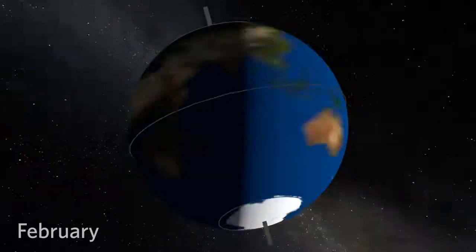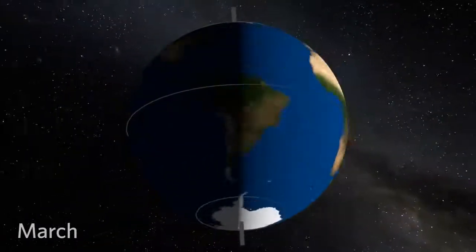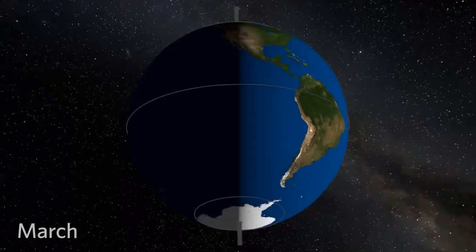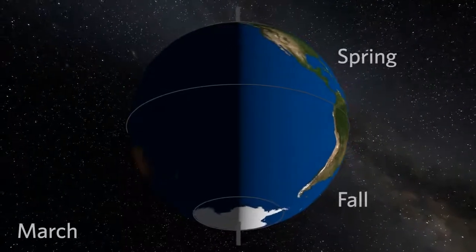As Earth orbits the Sun, we move towards spring in the northern hemisphere. Now Earth is tilted neither toward nor away from the Sun, as day and night are about equal in length.